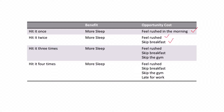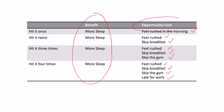Now ten minutes goes by again and the alarm goes off. We think, should we hit it a third time? The benefit is more sleep, but we feel rushed, we might skip breakfast, and now we might even skip going to the gym. If we hit it four times, then we feel rushed, skip breakfast, skip the gym, and we are late for work. The benefit of choosing to hit the snooze button is more sleep, but the cost is what we give up each time we hit it.